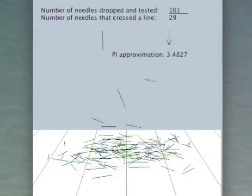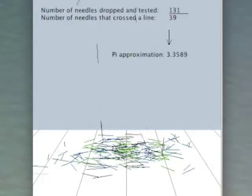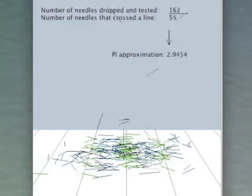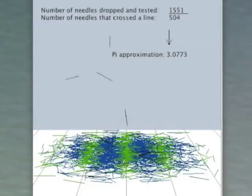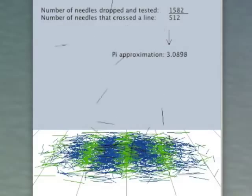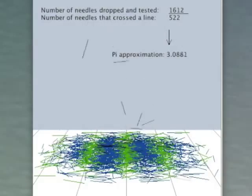Now, in this case, the length of a needle is exactly one-half the width between the lines. So the needles are colored green if they land on a line and blue if they don't.